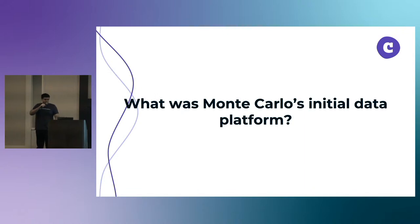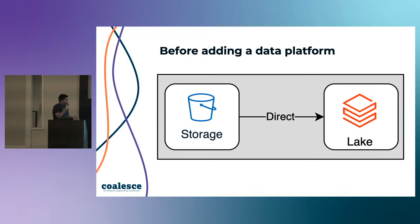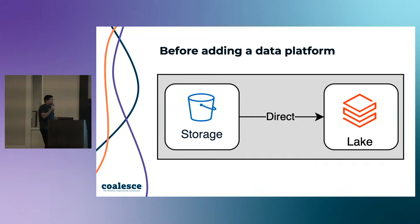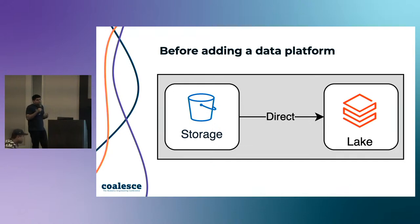What was Monte Carlo's initial data platform? Well, before we had anything, we had an S3 bucket where data was ingested through Kinesis. We had some Databricks jobs that took that data, transformed it a little, ran some business logic, and dumped it back into S3. That ended up in our application. For anyone who's worked with data, you probably already know this was not a good long-term option. It wasn't scalable, it wasn't maintainable, and it was just blob storage. At the same time, we were trying to build out our data team and the need came for a proper platform, so I immediately volunteered to take this on.